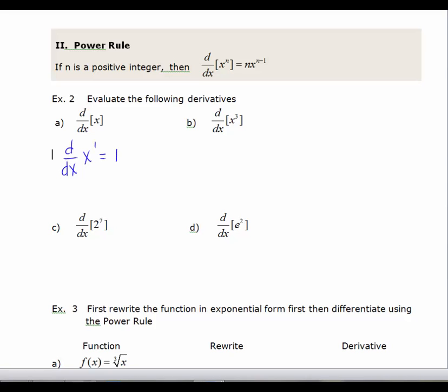And I would take x and raise it to the 1 minus 1. Well, x to the 1 minus 1 is x to the 0. And 1 times x to the 0 is just 1.